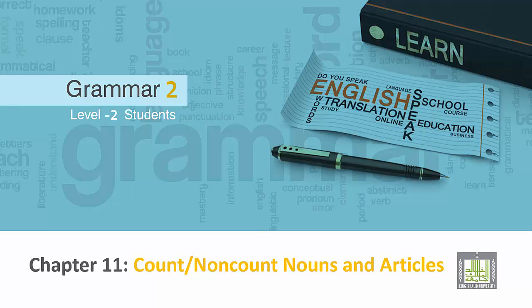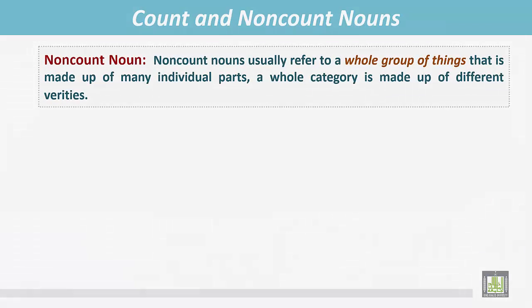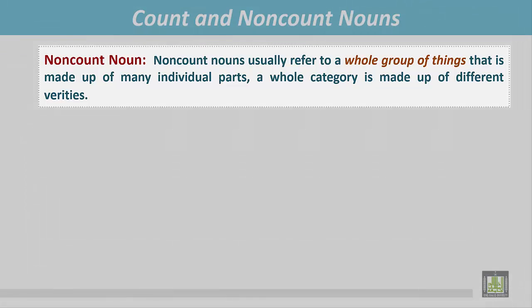Grammar 2 for Level 2 students, Chapter 11: count or non-count nouns and articles. Non-count nouns usually refer to a whole group of things that is made up of many individual parts. A whole group is made up of different varieties.